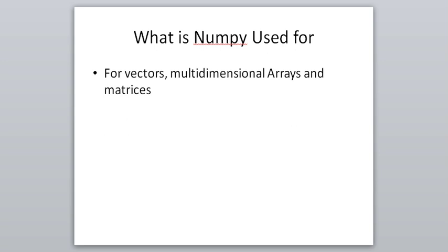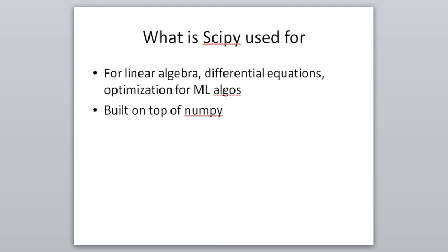SciPy is used for linear algebra, differential equations, numerical integration, and optimization of machine learning algorithms. You have algorithms like linear regression, logistic regression, or support vector machines where you optimize using something like stochastic gradient descent. If you want to write those optimizations yourself, you can use the SciPy library. Since SciPy is built on top of NumPy, it is easier to work with SciPy for specific use cases like optimization.